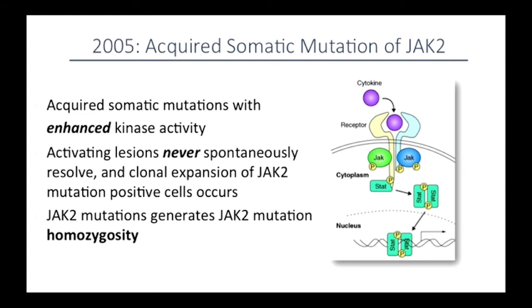These activating lesions never spontaneously resolve. Once the mistake is made in the genetic code, when that cell divides, the daughter cells have that mistake also. It's like photocopying an error — every time the cell divides, it's not corrected. The cell with the JAK2 mutation can live longer or outperform cells that don't. And the JAK2 mutation very uniquely has the ability to make two copies in one cell. We're familiar with the term heterozygous — one copy. For some reason, the JAK2 mutation can acquire a second copy on the other allele, giving a double dose. This gene dosage informs the allele burden, which we'll talk about in a bit.